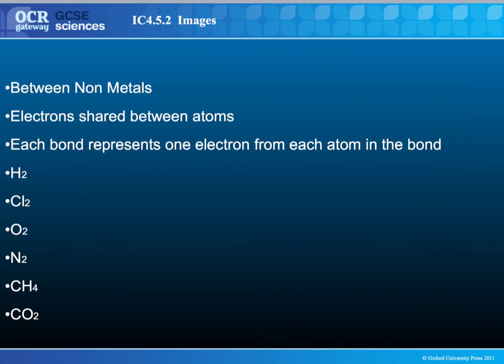Here are some to try for yourself. Remember, each bond represents one electron from each atom in the bond — the electrons are shared, and it only occurs between non-metals. That's an important point for an exam: if you're asked to draw a covalent bond, remember that if it's between two non-metals it will be covalent, and if it's between a metal and a non-metal it will be ionic. Try hydrogen H₂, chlorine Cl₂, oxygen O₂, nitrogen N₂, and then have a go at methane CH₄, and carbon dioxide, which you've already seen.